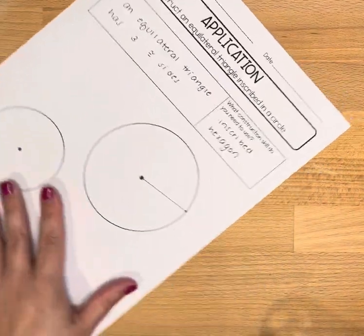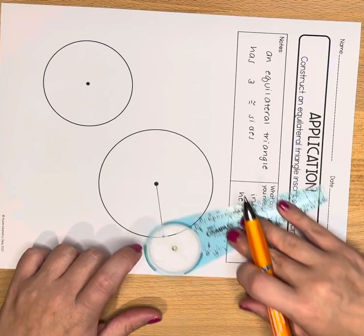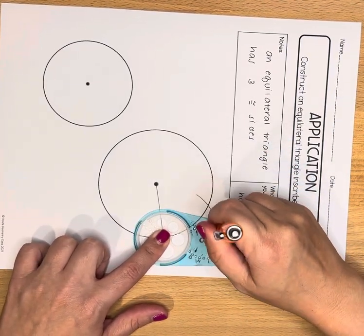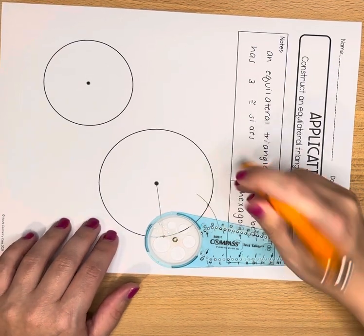I'll be rotating my paper a lot. I'm going to put the gold ring of my compass on that point on the circle, use the measurement from before, and draw an arc.